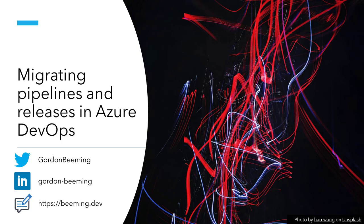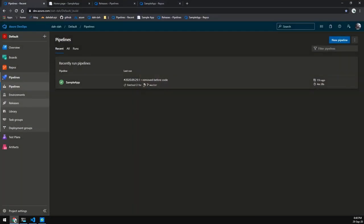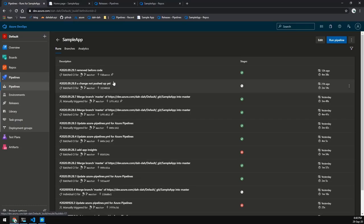Hi, my name is Gordon Beeming and in this video I'm going to show you how to migrate pipelines and releases in Azure DevOps. Let's start off by looking at our pipeline and what the YAML looks like for that pipeline.